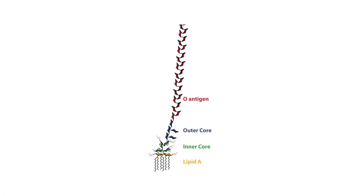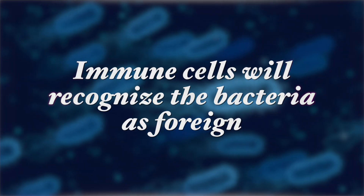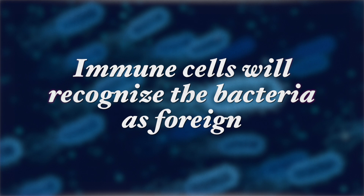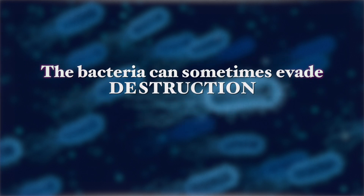The O antigen, which is the outermost structure, is called an antigen because it is the target for the recognition of the host or human immune response. The immune response to endotoxins goes like this: once inside the body, immune cells will recognize the bacteria as being foreign, and the bacteria can sometimes evade destruction.